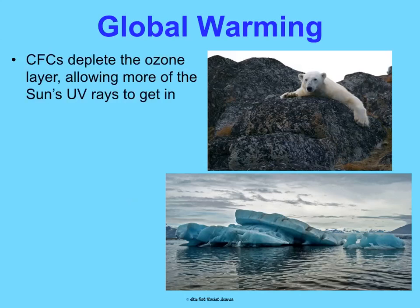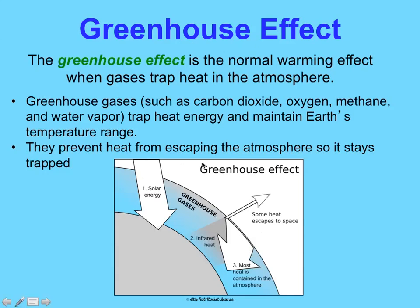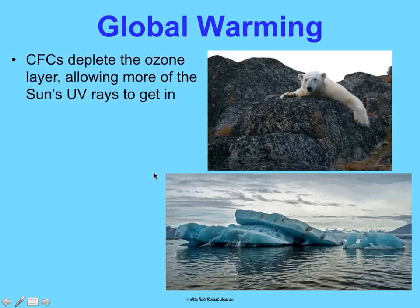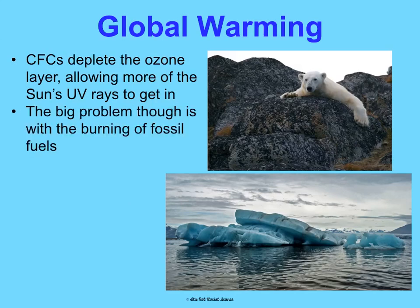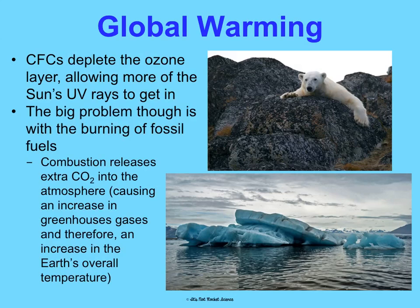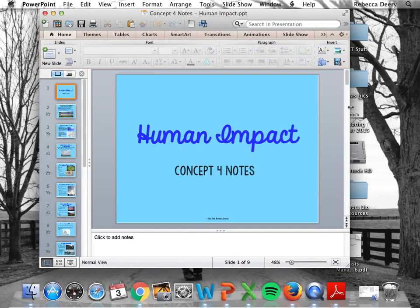Global warming is caused by two things. CFCs deplete the ozone layer, which normally prevents too much solar energy from coming in, so we're bringing in too many UV rays. But the main problem is the burning of fossil fuels — combustion adds far more greenhouse gases to the atmosphere. So not only are we letting more sunlight in, but we're also trapping more of it, increasing Earth's overall temperature — which is not good for things like polar bears. I'll draw a diagram on the board to explain this further, and there's also a great Crash Course Human Impact video you can find on YouTube.